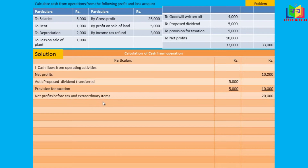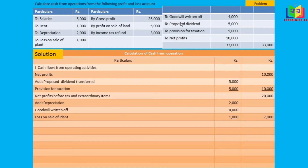Now we add the non-operating expenses: depreciation of 2,000, goodwill written off of 4,000, and loss on sale of plant of 1,000. We've finished writing all the non-operating expenses, giving a total of 7,000.